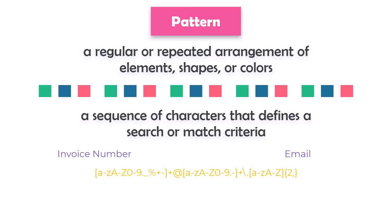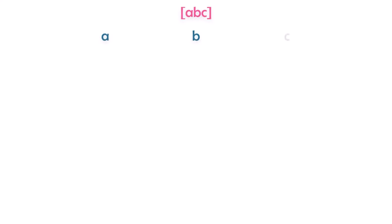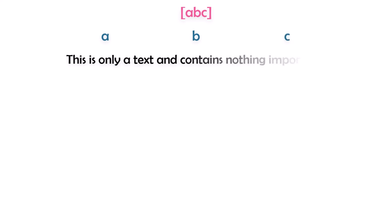Let's now start learning the different patterns we can use to find specific text. The first one is a character set like [ABC], which means I am searching for only these three characters: A, B, or C. For example, if I use this pattern on some text, I will get only the matching characters as output. This pattern finds the exact same character and it's case sensitive.